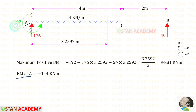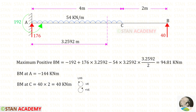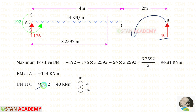Now let us find the bending moment at point A. At point A, we have MA which is acting in the anticlockwise direction so it will be negative. To find the bending moment at C, we can use the left hand side rule. RB is acting in the anticlockwise direction so it will be positive and the distance is 2. For bending moment at C, we will get 40 kNm.